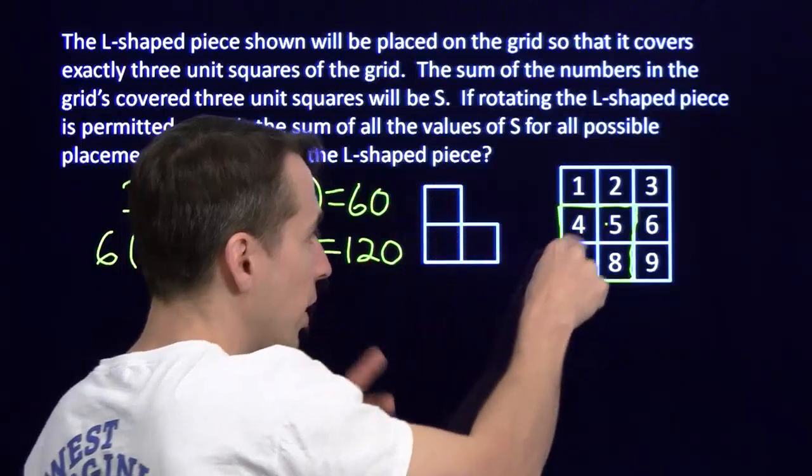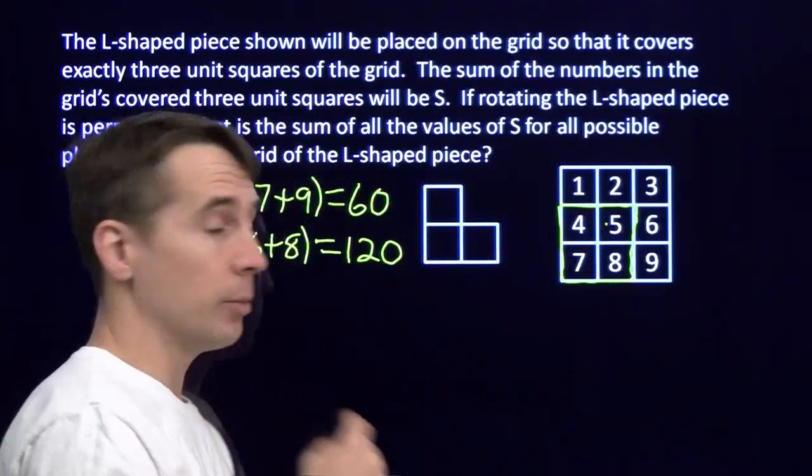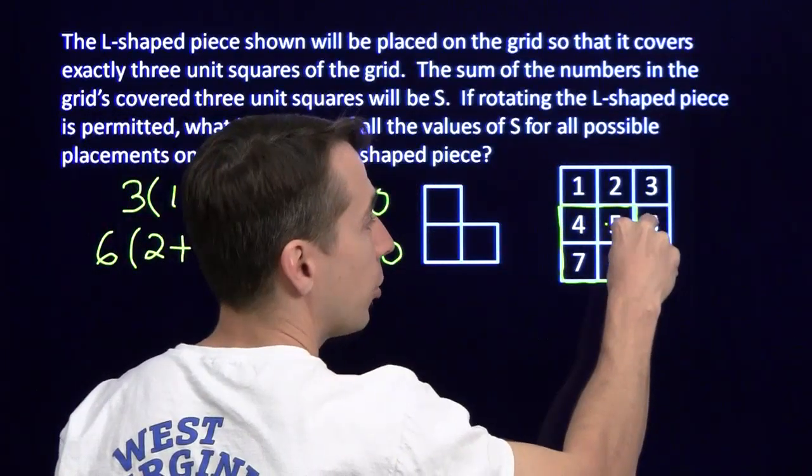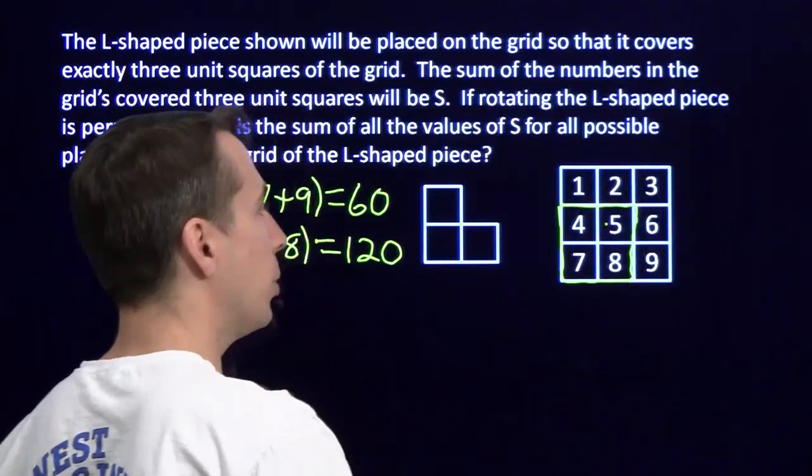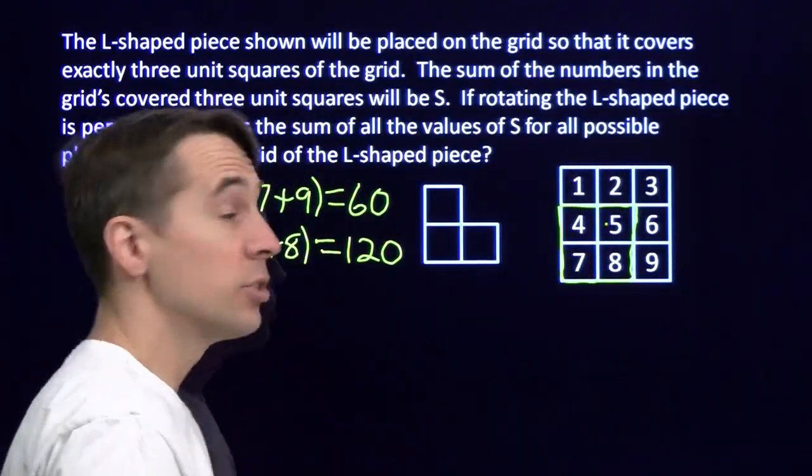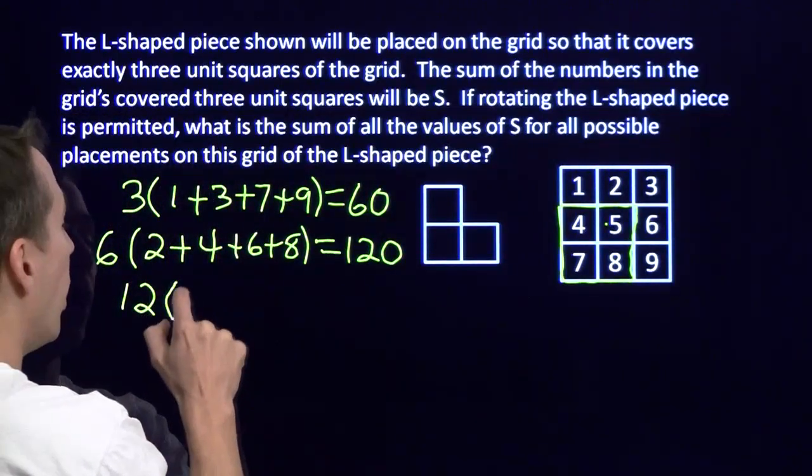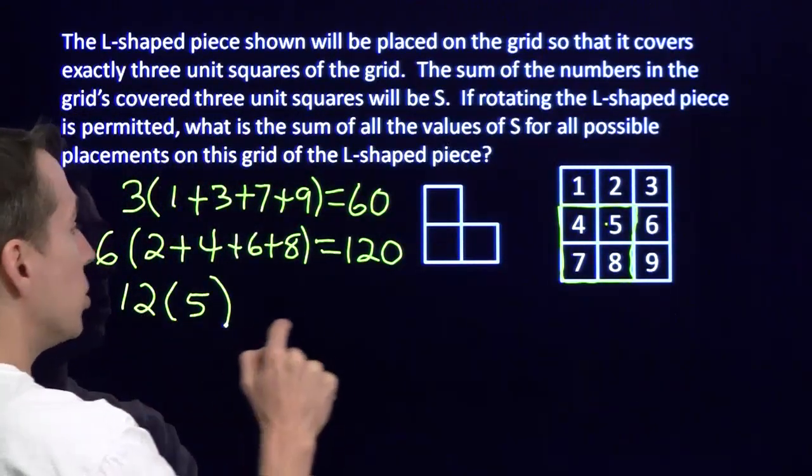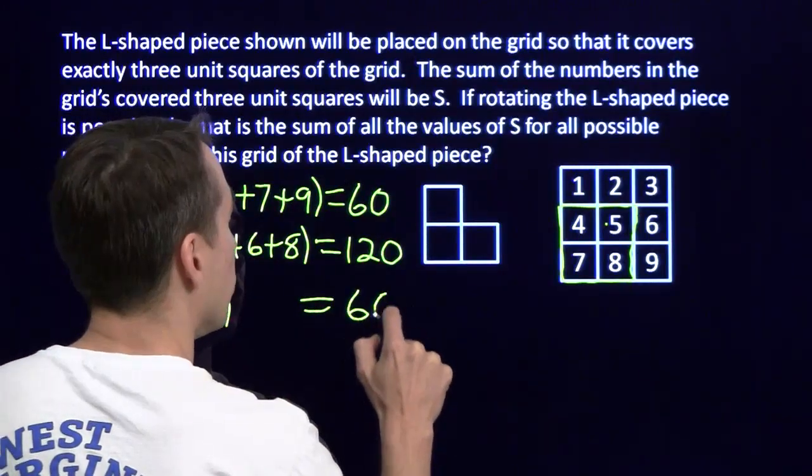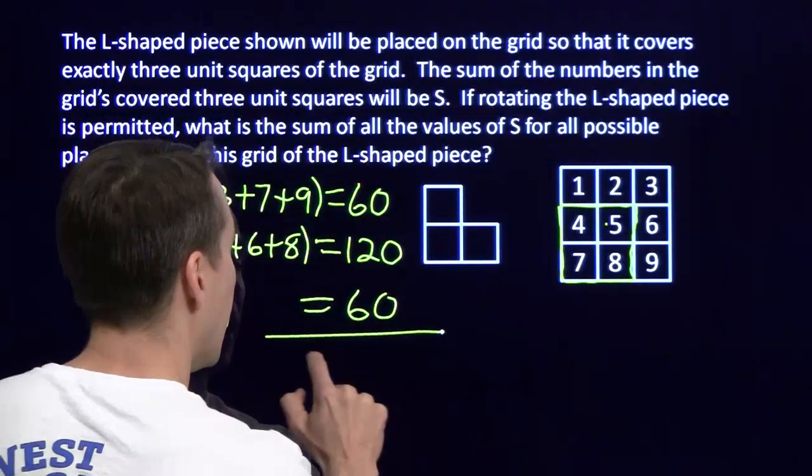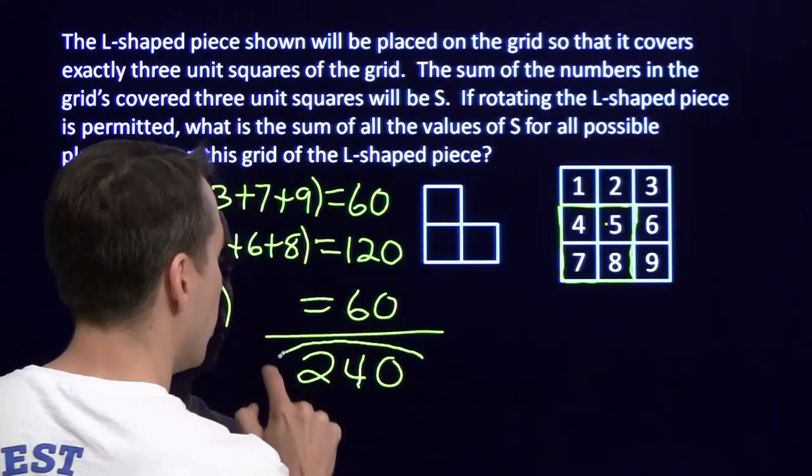There are 4 ways to put the L-shaped piece in there, 3 of them cover the 5. Over here there will be 3 ways to cover the 5. Over here there will be 3 ways to cover the 5, and up here. So there will be 12 ways to cover the 5. So the 5 is going to show up 12 times. That will contribute 12 times 5 equals 60. And we add these up, and we get our answer, 240.